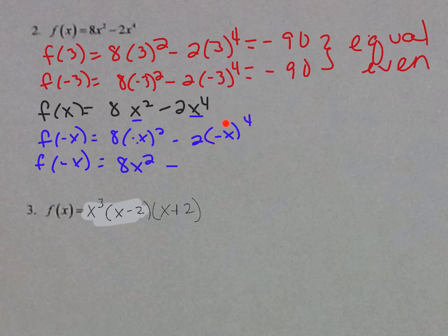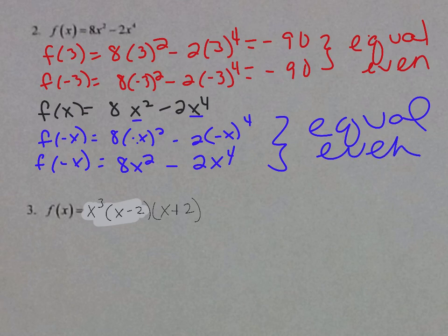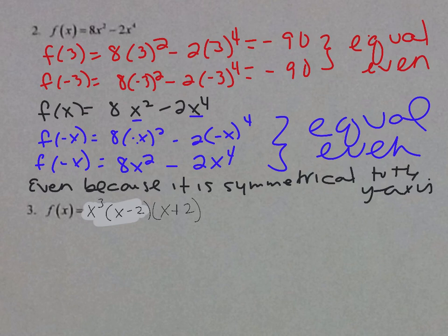Since negative x to an even power is always positive, f(negative x) = 8x² − 2x⁴, which equals f(x). So plugging in negative x gives the same exact thing — that means they're equal, and equal means even. It's an even function because it is symmetrical to the y-axis.